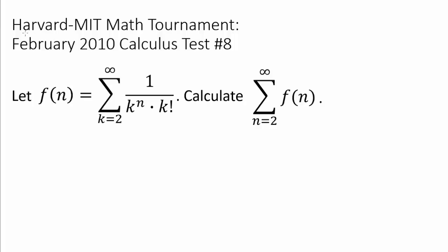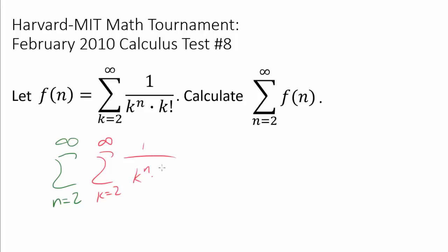Let's try out this problem from the Harvard-MIT math tournament from 2010. Let f be the summation from k equals 2 to infinity of 1 over k to the nth power times k factorial. We wish to calculate the summation from n equals 2 to infinity of f, which is the summation from k equals 2 to infinity of 1 over k to the nth power times k factorial. So we have this double summation.